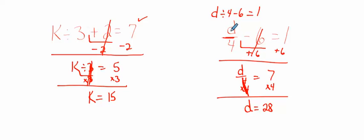So let's go and plug it in. 28 divided by 4 would give me 7 minus 6. Yep, it equals 1, and I'm done. All right, so I'm going to give you a couple problems. I want you to try them out. Feel free to come back and watch this video more than once.